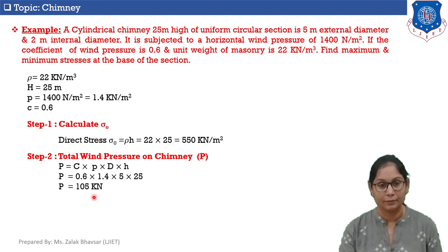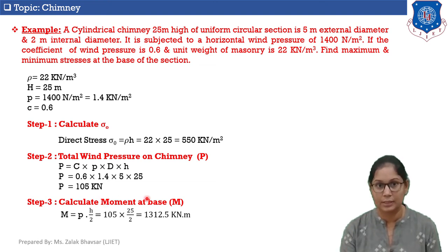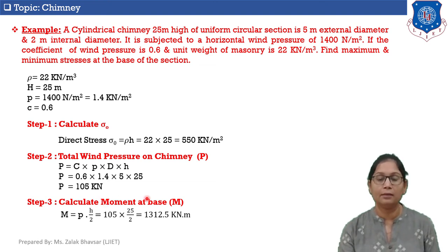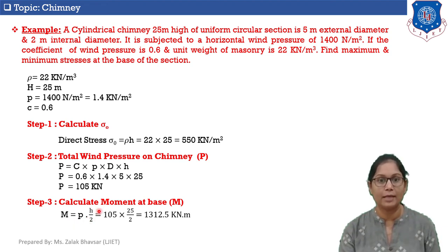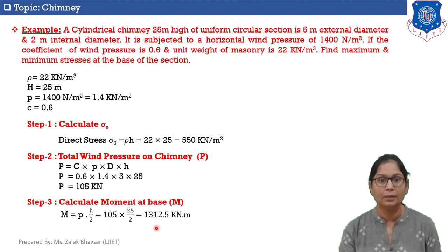Step number three: calculate the moment at the base, M. The equation is M equals P times h divided by 2. The value of P is 105 kN and the height of the chimney is 25 meters. Therefore the moment at the base of the chimney is 1312.5 kN·m.